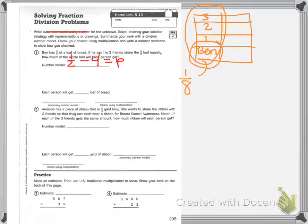My answer is they'd each get one eighth loaf of bread. Then I need to summarize it. I'm going to do that in green with the division number model. So one half divided by four equals one eighth, and I showed that with the orange.